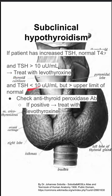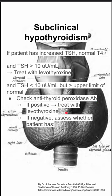If the TSH is less than 10 but bigger than the upper limit of normal, then you want to check antithyroid peroxidase antibodies. If the patient does have antithyroid peroxidase antibodies, you can go ahead and treat with levothyroxine.